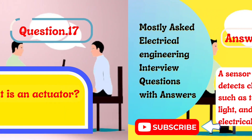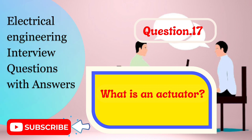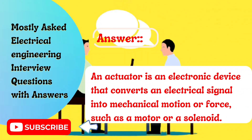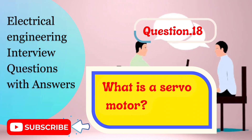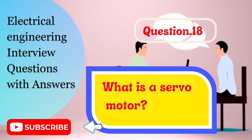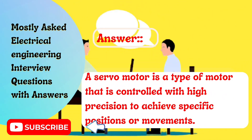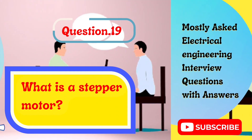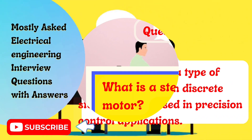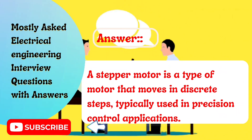Question 17: What is an actuator? An actuator is an electronic device that converts an electrical signal into mechanical motion or force, such as a motor or a solenoid. Question 18: What is a servo motor? A servo motor is a type of motor that is controlled with high precision to achieve specific positions or movements. Question 19: What is a stepper motor? A stepper motor is a type of motor that moves in discrete steps, typically used in precision control applications.